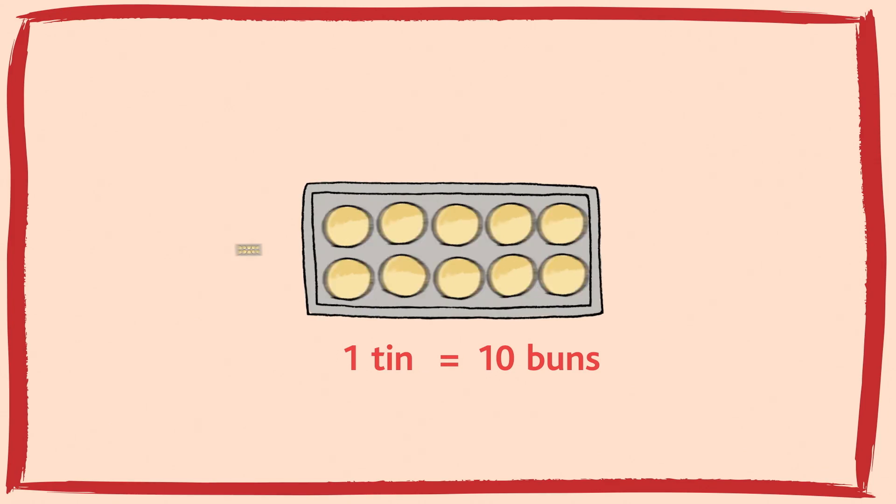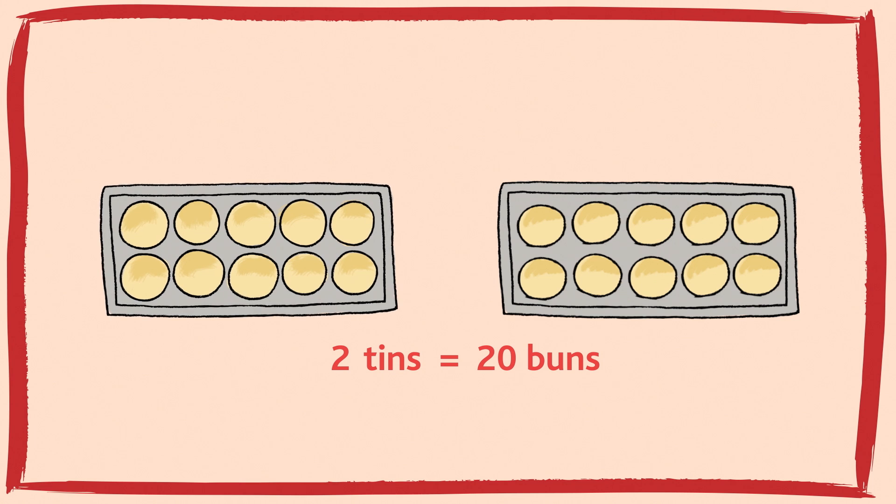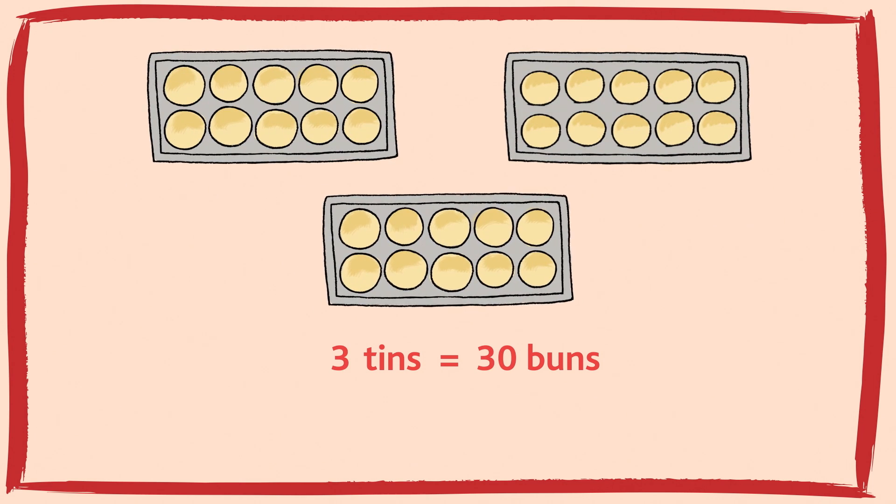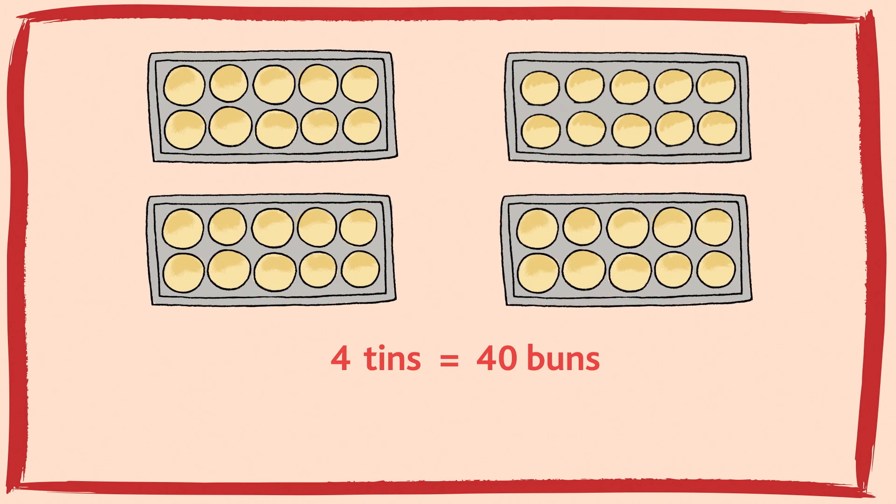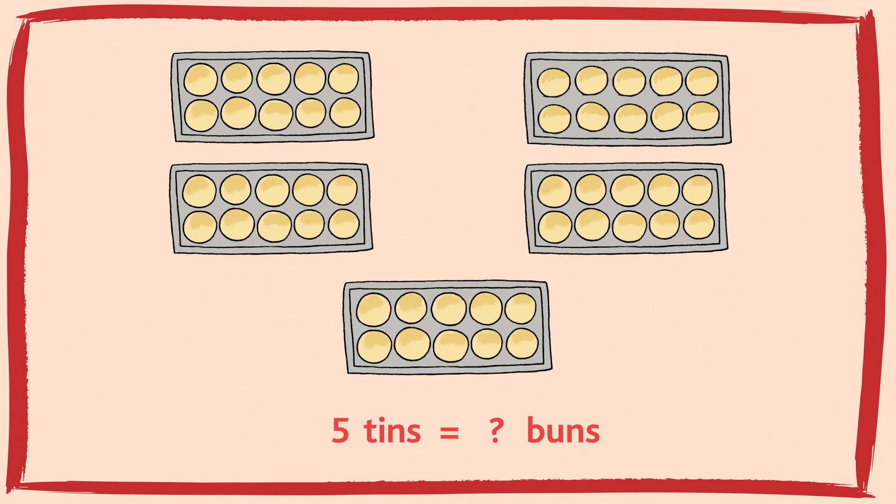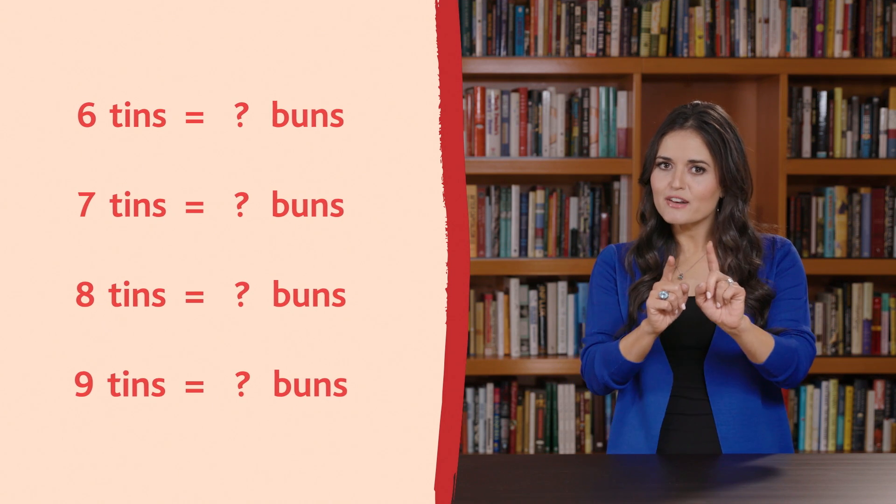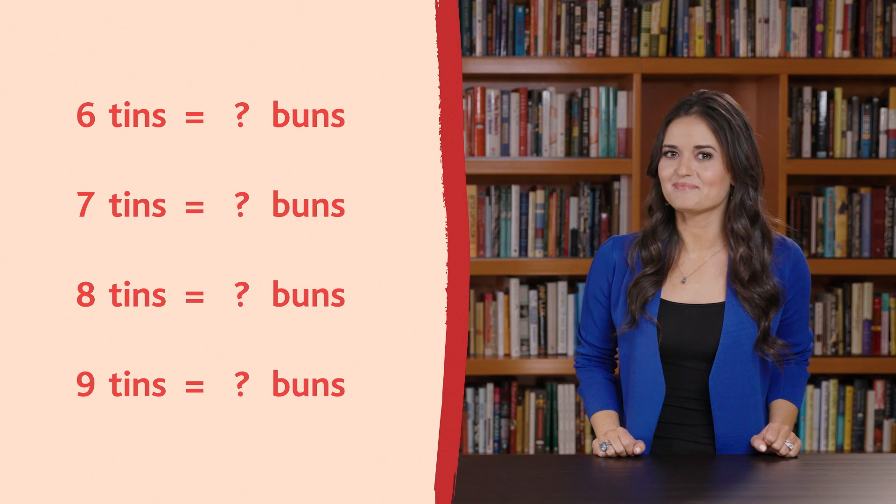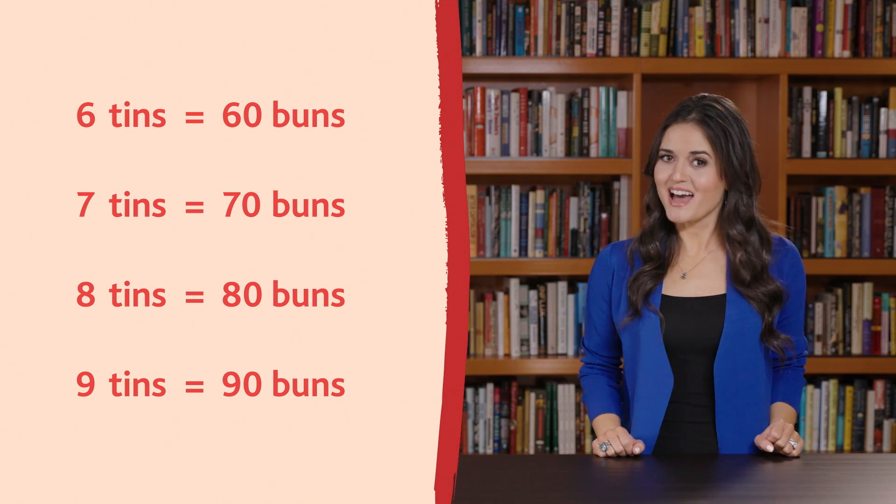Notice that since there are 10 buns in each tin, we also know that 2 tins are the same as 20 buns, 3 tins are the same as 30 buns, and 4 tins is the same as 40 buns. Can you see the pattern? How many buns are in 5 tins? Yep, 50 buns. Can you figure out the rest? Pause the video and say them out loud. Not so bad, right?